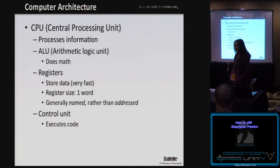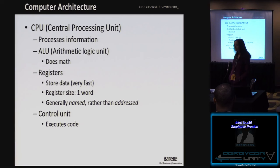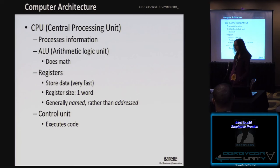The CPU contains a few key pieces. It's responsible for processing information. It contains an arithmetic logic unit — it does all your math. It contains some registers. The registers store data, and because they're in the CPU, they're extremely fast. The register size is one word, so on a 32-bit architecture they'd be 32-bit size. They're generally named rather than addressed. It also has the control unit, which actually executes the code that you're asking it to do.